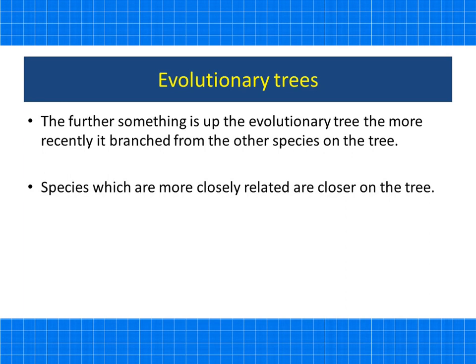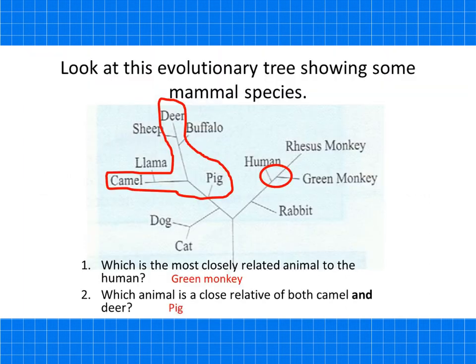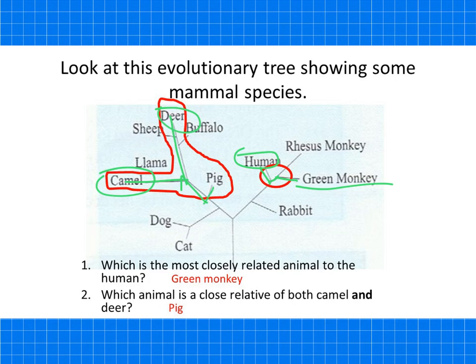A couple of tips: on an evolutionary tree, the further up something is, the more recently it branched from other species. And species that are more closely related are closer on the tree. For example, the closest relative to a human on this tree would be the green monkey. And to find the close relative of both the camel and the deer, trace back — the first thing that branches is the pig.